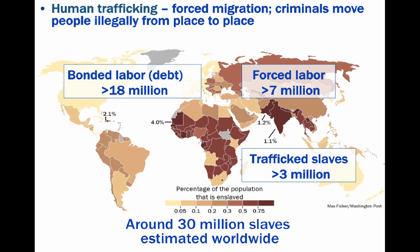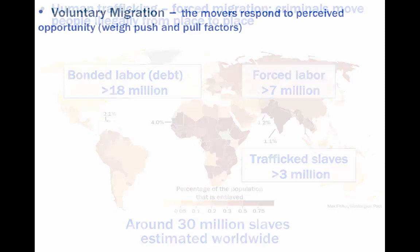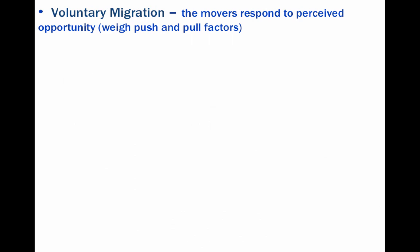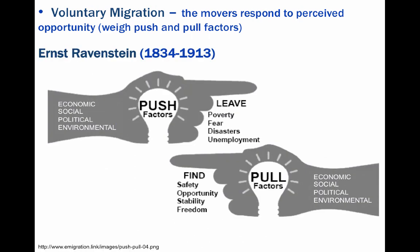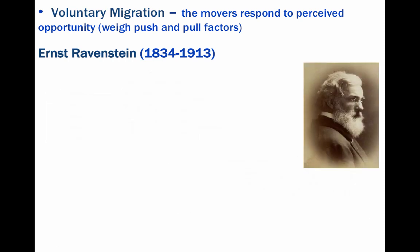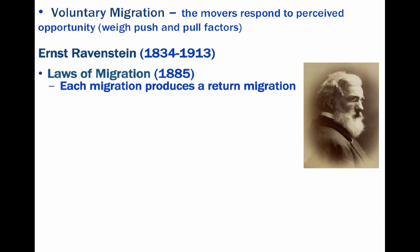Back in 1885, Ernst Ravenstein came up with his laws of migration, which involve push and pull factors. Bear in mind that economic factors are the main cause of all migration. One of his laws states that each migration flow produces a compensating counterflow, which is usually smaller than the initial migration — this is called return migration.